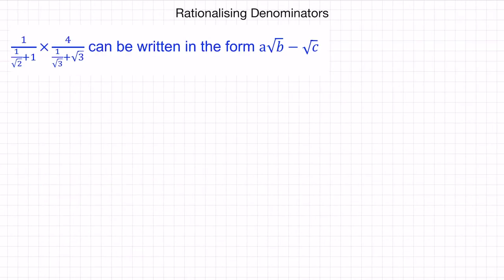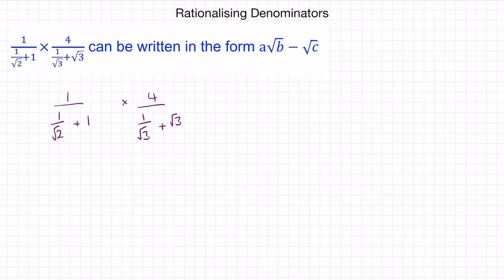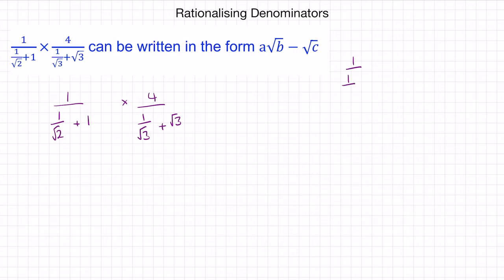For our final question, we've been asked to simplify this product and write it in the form A root B minus root C, where A, B, and C are values we need to find. If you want to try this yourself, you can pause the video. We're going to begin by simplifying the fraction 1 over 1 over root 2 plus 1. To simplify, I'm going to cancel out this root 2 by multiplying the numerator and denominator by root 2.